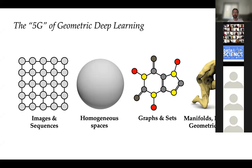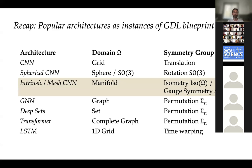I'll be talking mainly about manifolds in basic terms, and then Taco will continue in his lecture about the broader gauge theory and the concepts of bundles. If you remember the table with different popular architectures of deep learning as instances of our geometric deep learning blueprint, for manifolds the architectures we consider are intrinsic or mesh convolutional networks. We actually have two different symmetry groups: the isometric group that describes deformations of the manifold, and the gauge symmetry that describes local transformations.